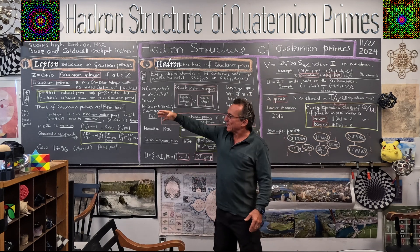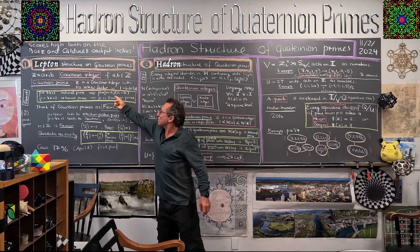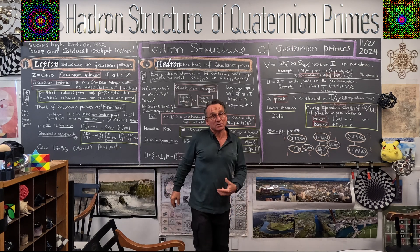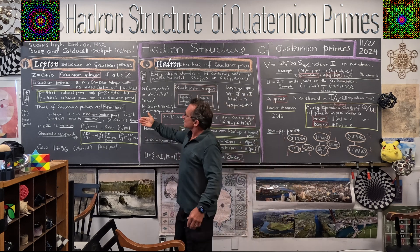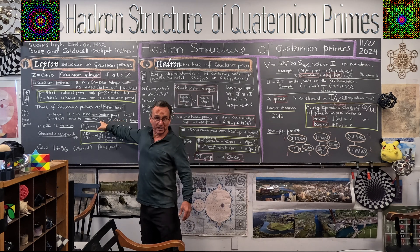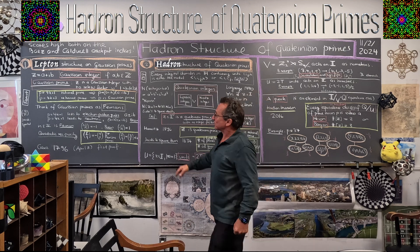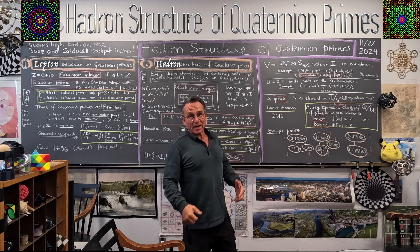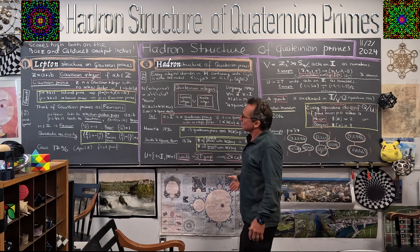If you have a prime of the form 4k+1, it decays into two particles — it's a product of two particles, so you can think about that as a boson. The other primes of the form 4k+3 you can think about as fermions. I once dubbed the ones of the form 4k+3 as neutrinos, and the 4k+1 primes produce electron-positron pairs. These are the primes of the form 4k+1 — they decay.